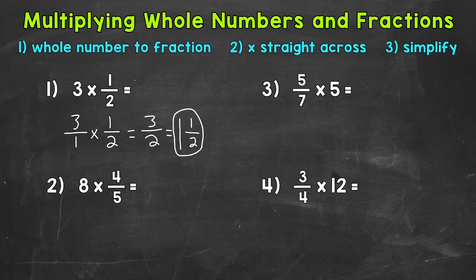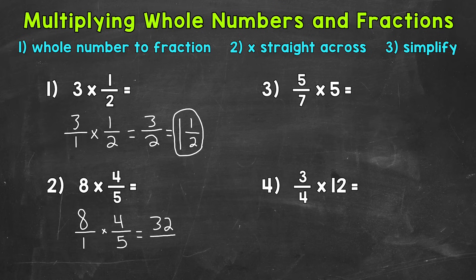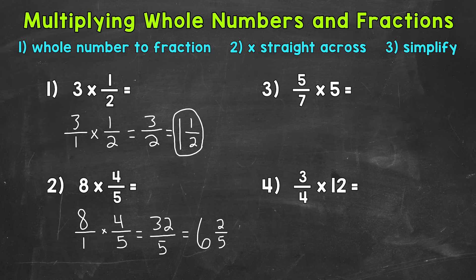Let's move on to number two, where we have eight times four-fifths. First, let's rewrite our whole number as a fraction by putting it over one, and bring down the rest of the problem. Now multiply straight across: eight times four is 32, and one times five is five, giving us 32 over five. That's an improper fraction, so let's convert it to a mixed number. We do 32 divided by five — how many whole groups of five out of 32? Six, which gets us to 30, so we have a remainder of two. Keep the denominator of five the same. Two-fifths is in simplest form, so our final answer is six and two-fifths.